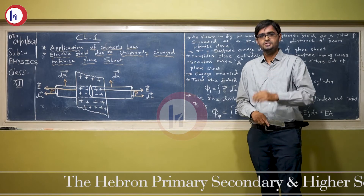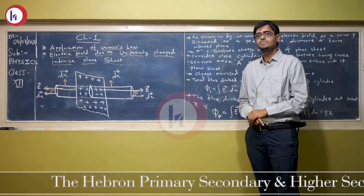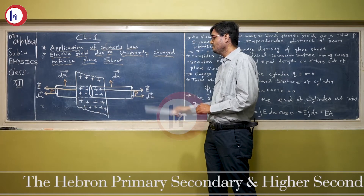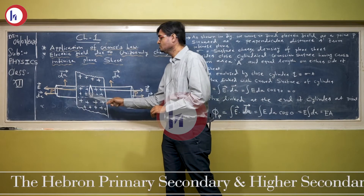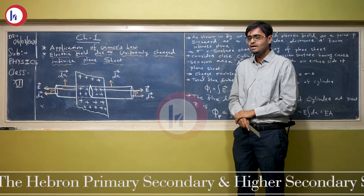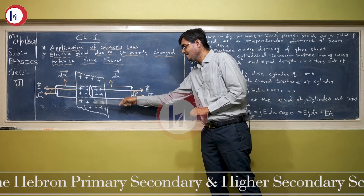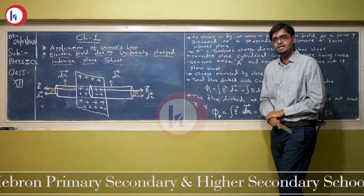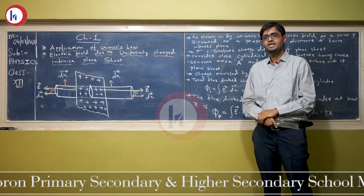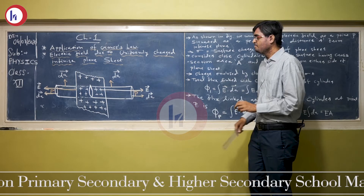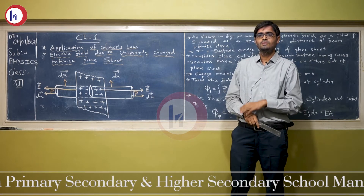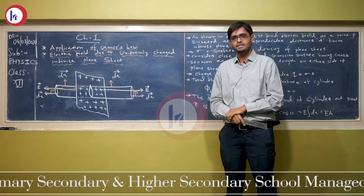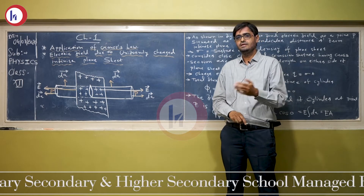We also have another point P dash which is at the same distance r on the other side of the plane sheet. The distance from the plane sheet to point P is the same as the distance from the plane sheet to P dash. If the distance is the same, then the electric field will be constant — the electric field at P and P dash would be the same. That is why we have this kind of symmetry.